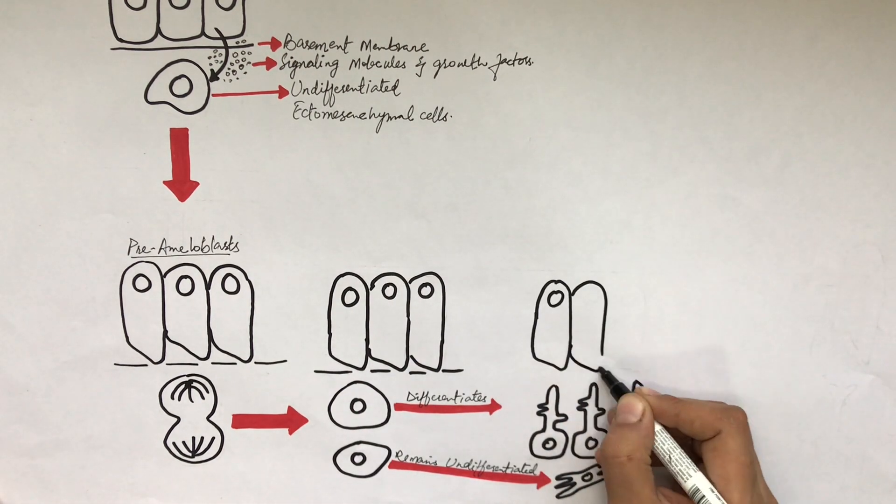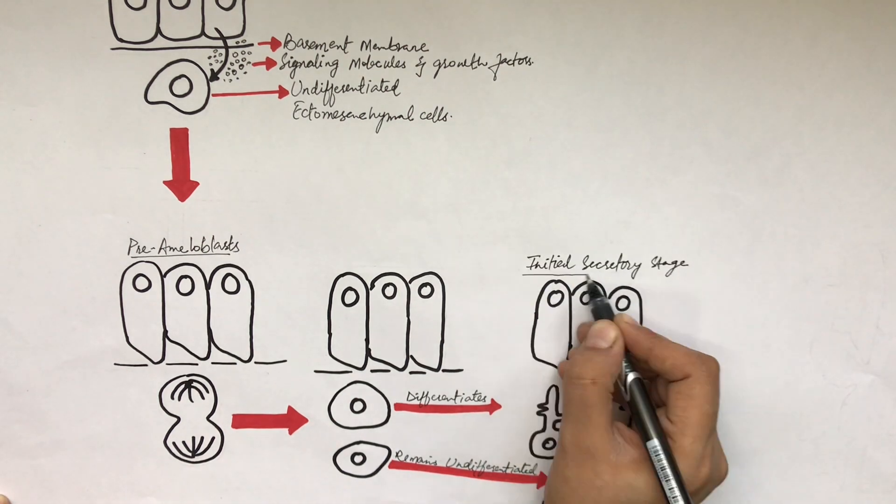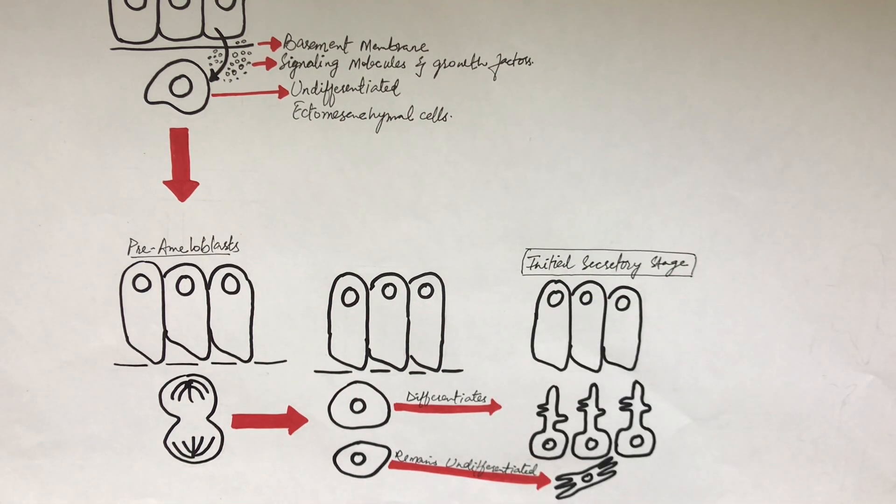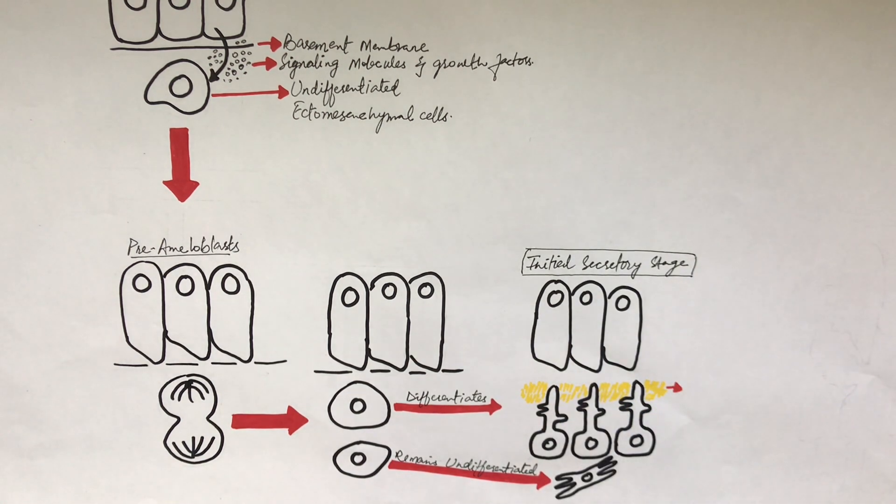After the pre-ameloblast becomes the mature ameloblast and enters its initial secretory phase, the newly differentiated odontoblasts will lay down the dentinal matrix to pump at the end of its cytoplasmic extensions. This first layer of unmineralized dentinal matrix is called mantle pre-dentine. The word pre-dentine refers to the unmineralized dentinal matrix.